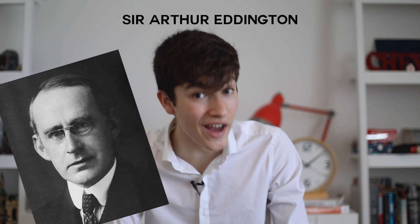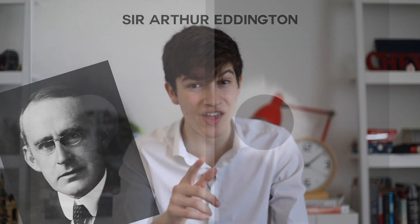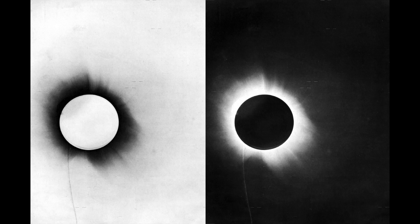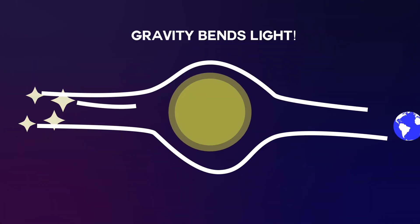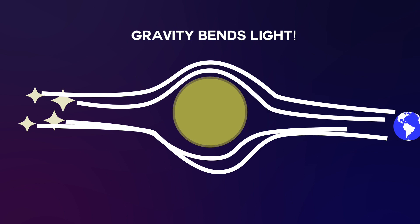Ideas are one thing and the behavior of nature is another, and only when both meet do we say that we have an acceptable theory. In 1919, Sir Arthur Eddington did just that. He took pictures of the sun and detected the light emitted by a group of stars that were known to be directly behind it. The gravity of the sun had bent their light, just like in our example.